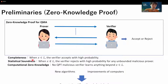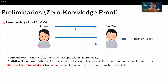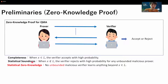One way to resolve the problem is to use zero-knowledge proof for QMA with statistical zero-knowledge. In a protocol with statistical zero-knowledge, the security holds against an unbounded malicious verifier, so the security will never break in the future. However, it is believed that we cannot construct zero-knowledge proof for QMA with statistical soundness and statistical zero-knowledge at the same time.